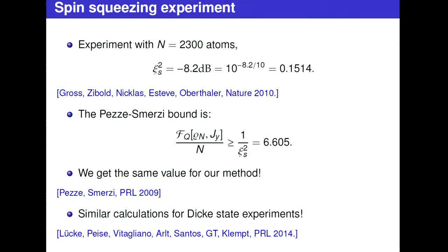This was applied to an experiment with 2300 atoms, where the spin-squeezing parameter is 0.15 — well below one, confirming the state is entangled. The Pezzè–Smerzi bound gives a quantum Fisher information corresponding to this value, and our method gives the same result. This confirms our method is probably correct and shows the Pezzè–Smerzi bound is optimal in this case. But it also shows we can calculate things for systems of this size and could add further parameters to get a better bound.